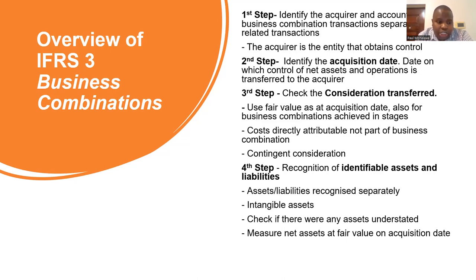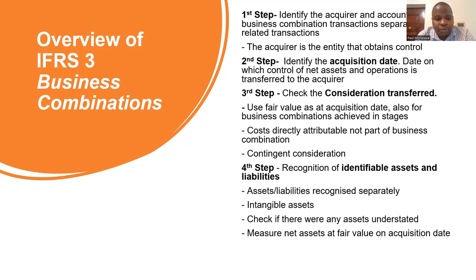Step number three: you need to check the consideration transferred. The consideration transferred is the amount of money in cash and in kind that is transferred to the transferee or the entity that is being acquired. You have to use fair values at the acquisition date. You also have to check the costs directly attributable to the business combination — for example, legal costs — and depending on the agreement between the acquirer and acquiree, you have to consider how you're going to treat those costs.